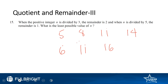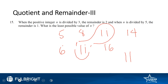So the least value of n is 11. This again was a quotient and remainder question; however, it was even more difficult than the last question.